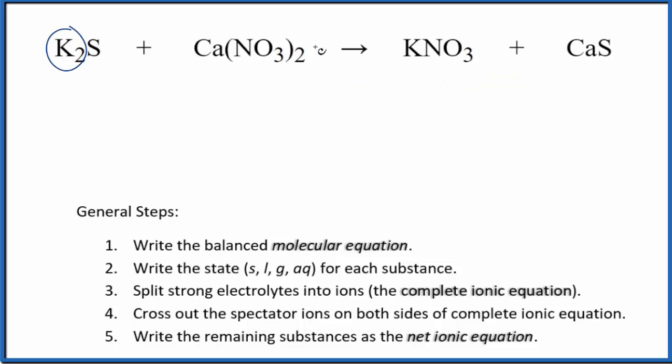I can see I have these two potassiums here and just one here. Let's put a coefficient of two in front of the potassium nitrate. Now I have two nitrate ions. That's okay, I have two nitrate ions here, so those are balanced. We have a calcium and a calcium and a sulfur and a sulfur. That's the balanced molecular equation.